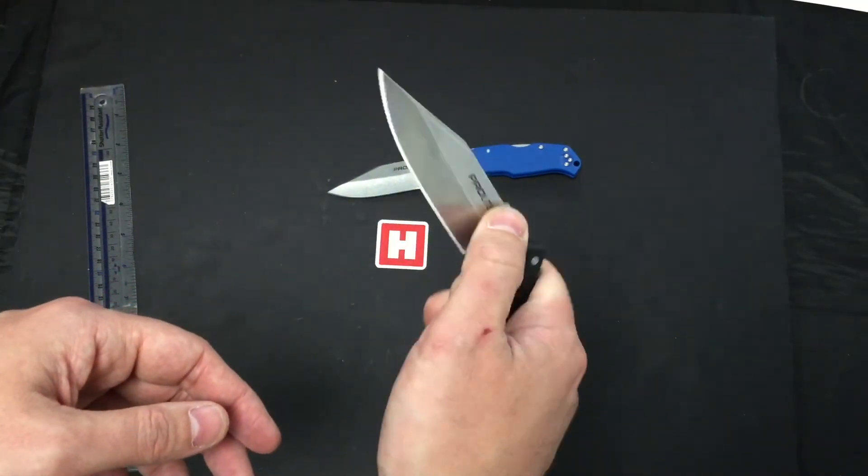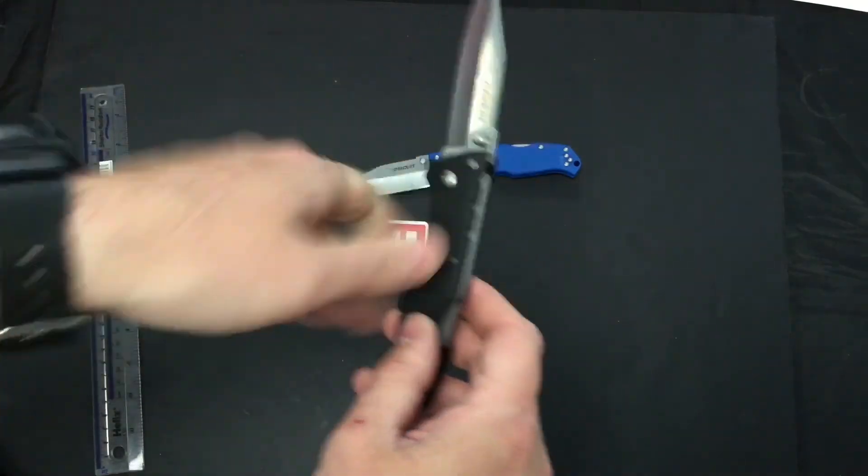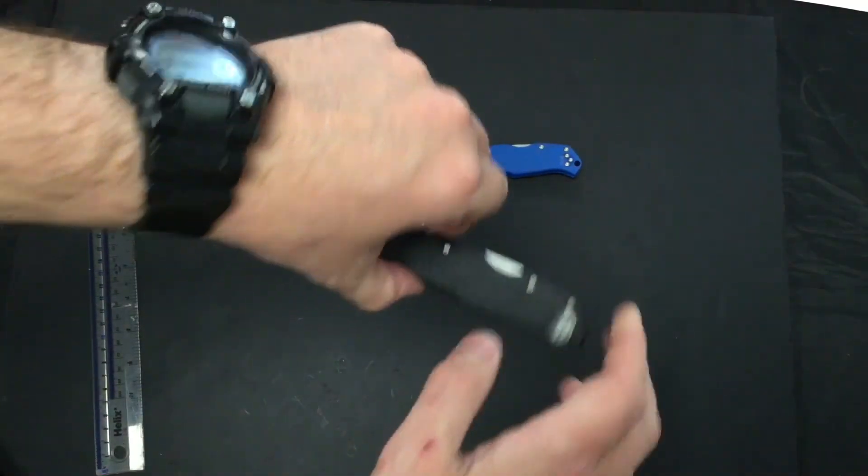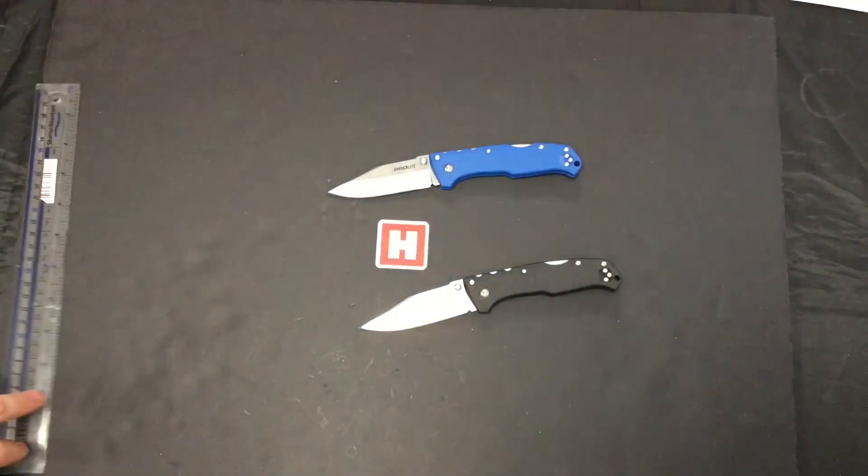But a really nice, strong, solid, lightweight knife from Cold Steel. So we'll pop it down and say that's the Pro-Lite clip point.